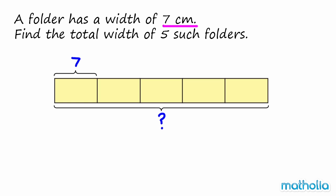We need to multiply the width of one folder by five. Seven times five equals thirty-five.